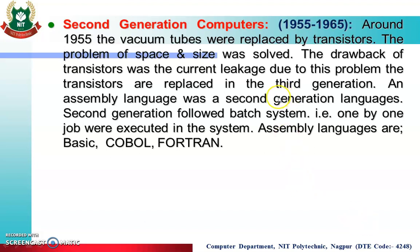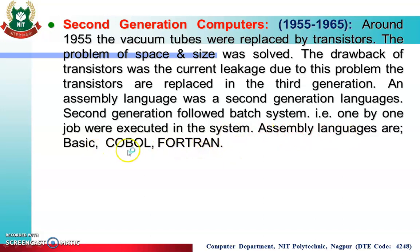The second generation of computers spans from 1955 to 1965. Here, vacuum tubes were replaced by transistors. The problem of space and size was solved, but the drawback of transistors was current leakage, due to which transistors were later replaced in the third generation. Assembly language was the second generation language, and this generation followed the batch system where jobs were executed one by one. Languages used include basic COBOL and FORTRAN.